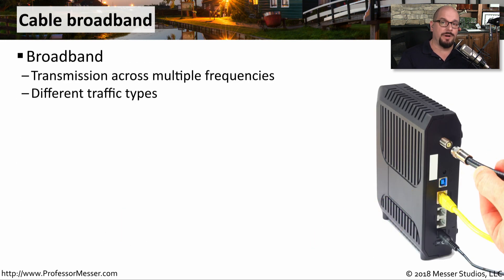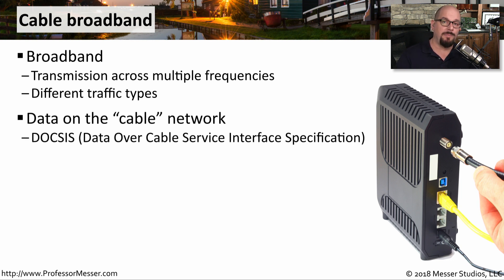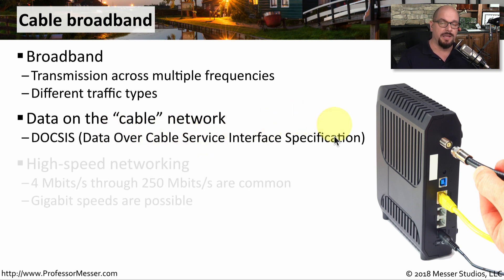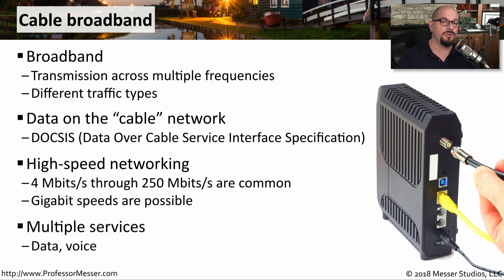A broadband wide area network connection uses different frequencies to send data, and you could even use different frequencies for different data types. We commonly use broadband when connecting a cable modem to traditional cable television networks. This is a standard known as DOCSIS, or Data Over Cable Service Interface Specification. Depending on your cable provider's implementation of DOCSIS, you can see throughput from 4 megabits per second up to 250 megabits per second. In some areas, they're supporting gigabit speeds over these cable broadband networks, and the traditional cable television company now also supports data and voice over the same broadband connection.